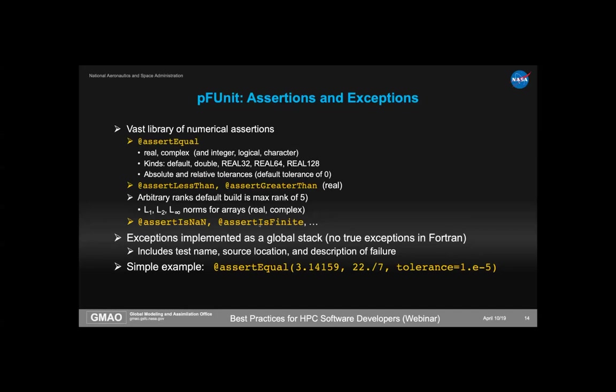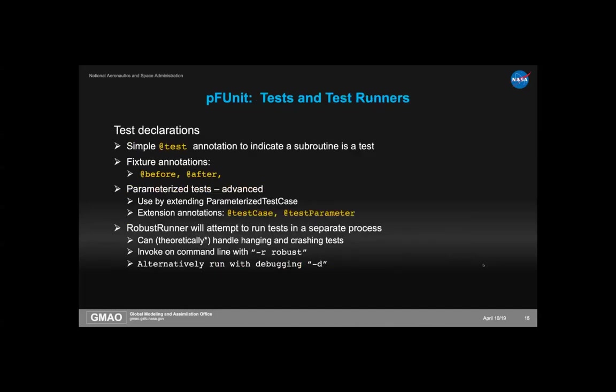A simple example: suppose you want to check that 22/7 equals pi to at least one part in 10⁻⁵. Your test would call assertEqual with 22.0/7.0 and the Fortran constant pi, with a tolerance of 1.0e-5. I suspect 22/7 is not nearly that accurate, so this test would likely fail.